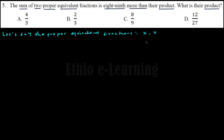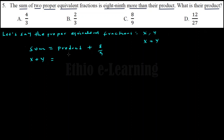Since the equivalent fractions share the same x value, both the x value and y value will be equal. Given that the sum of two proper equivalent fractions is eight-nines more than their product, eight-nines means 8/9. More than means addition mathematically. So the sum of the fractions equals the product plus 8 over 9. Since both proper equivalent fractions equal x, the sum is x plus y, which equals x times y plus 8 over 9.